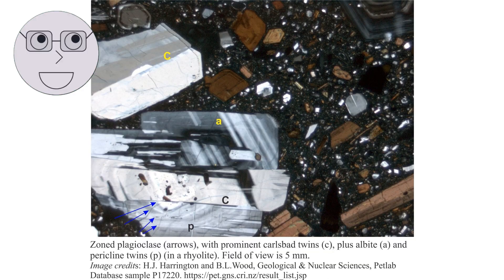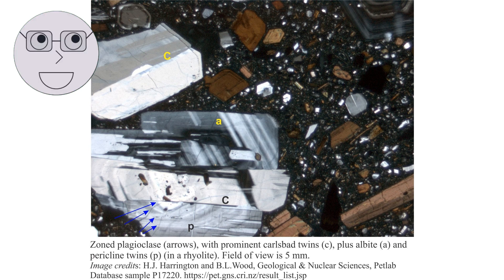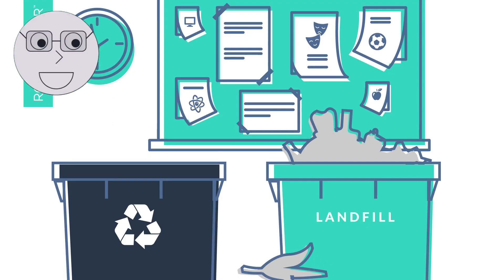The chemical composition of minerals can also vary within a single mineral — this is known as a solid solution. For example, the mineral feldspar can contain both sodium and potassium.